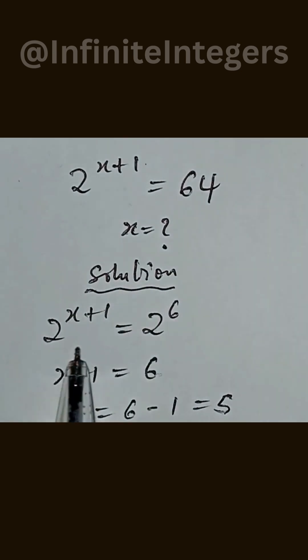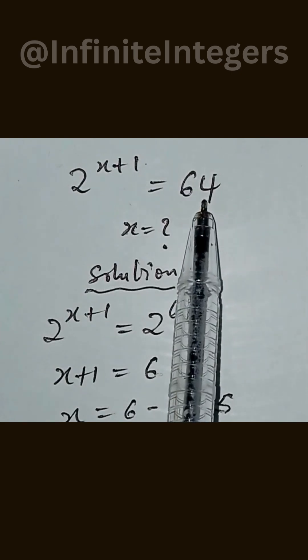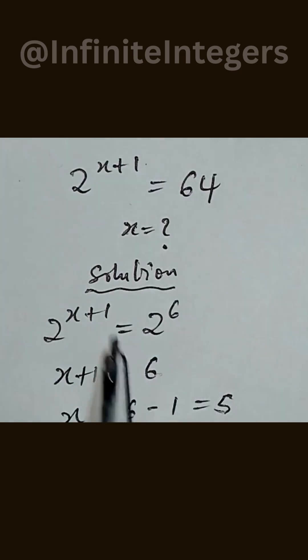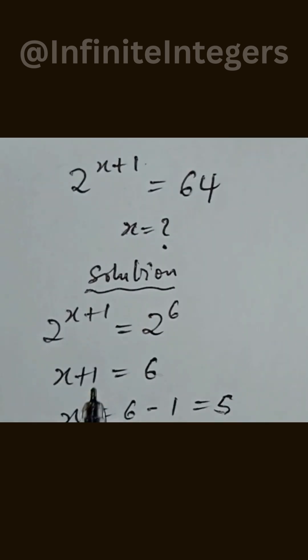So solution. From our solution, we have 2 to the power of x plus 1 equal to, we simplify this to base 2. So we have 2 to the power of 6. And now the bases are the same,